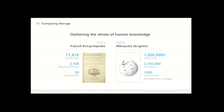Another example is the effort since ancient Greece of gathering the whole of human knowledge. In 1751, the French encyclopedia by Diderot and d'Alembert had 70,000 articles, 3,000 illustrations, and 35 volumes. Comparing that to Wikipedia's English version in 2009, which surpassed 3 million articles and had 2 million-plus images — someone calculated all that information at roughly 1,300 physical volumes of text, excluding any illustrations. This really underscores the explosion of computing storage.